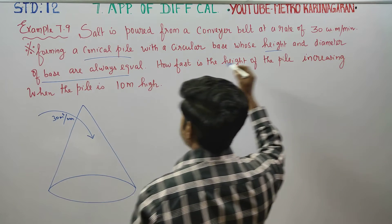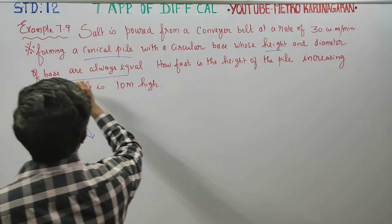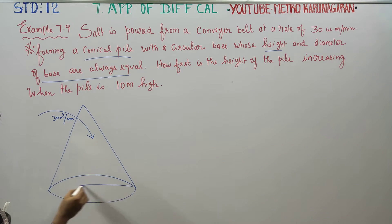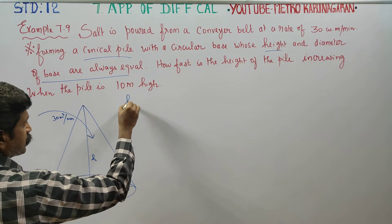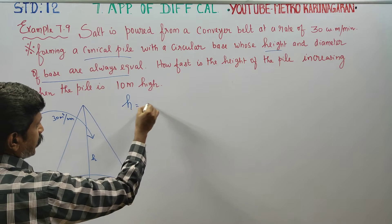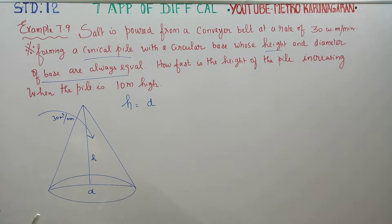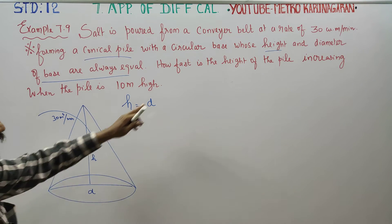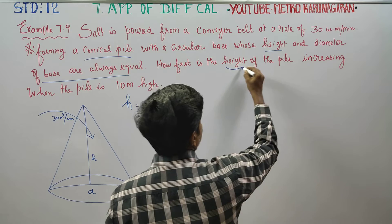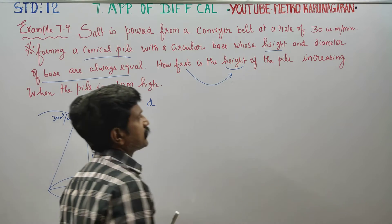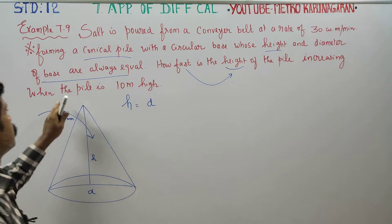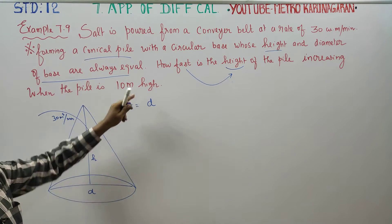Height and diameter of the base are equal. This is my base. The height is equal to the diameter. Height and diameter are equal. How fast is the height of the pile increasing when the pile is 10 meters high?